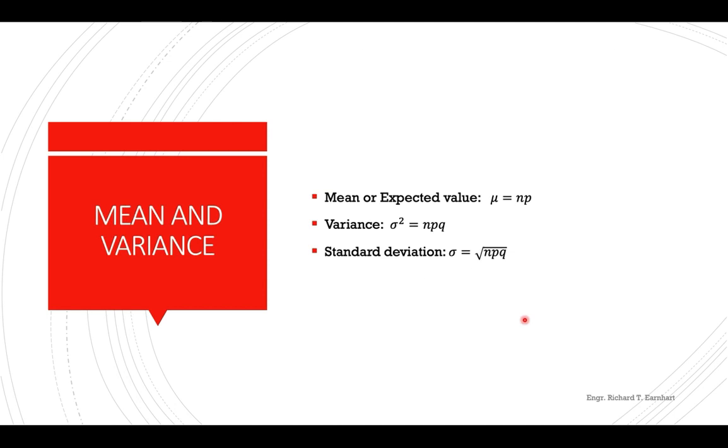The mean or expected value is n times p. The variance is npq. Now since the variance is given, the standard deviation is the square root of the variance, so your sigma is the square root of npq.